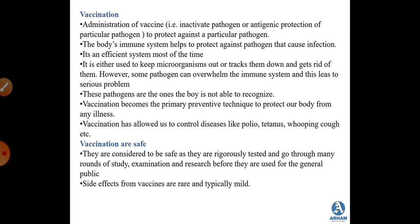In this session we will move to vaccination, antibody structure, and the antigen-antibody complex. Vaccination is defined as the administration of a vaccine — which can be an inactivated pathogen or antigenic preparation — to protect against a particular pathogen. The body's immune system helps protect against infection, and most of the time it is a very efficient system, keeping microorganisms out or eliminating them.